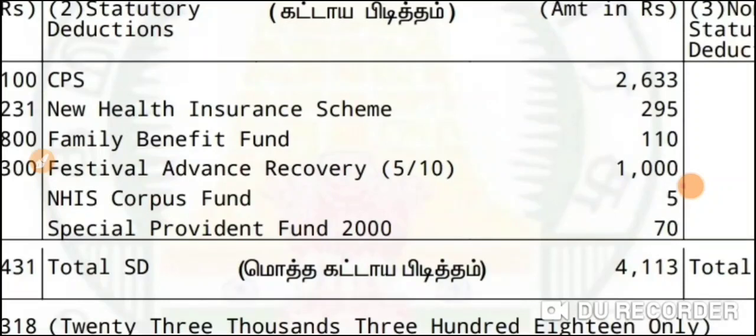You have family members, you have medical services, so you have to claim up the insurance. That's the Family Benefit Fund — 110. That's the same way, so we have 5,000.